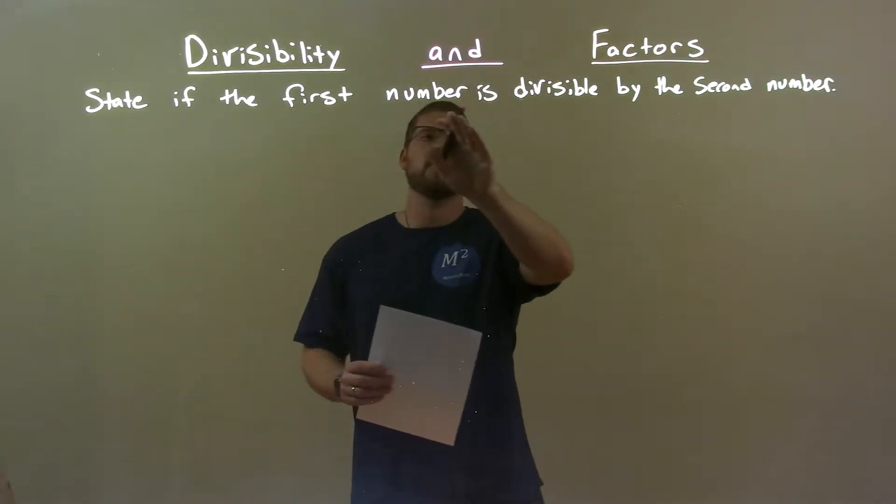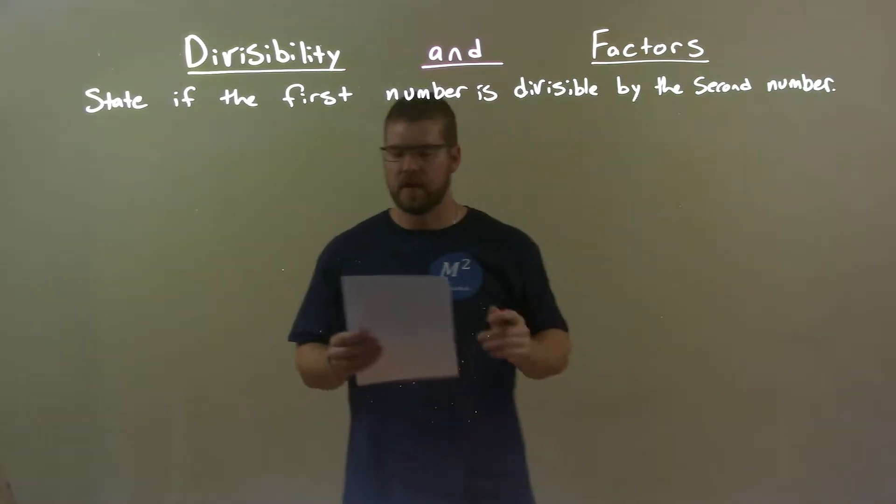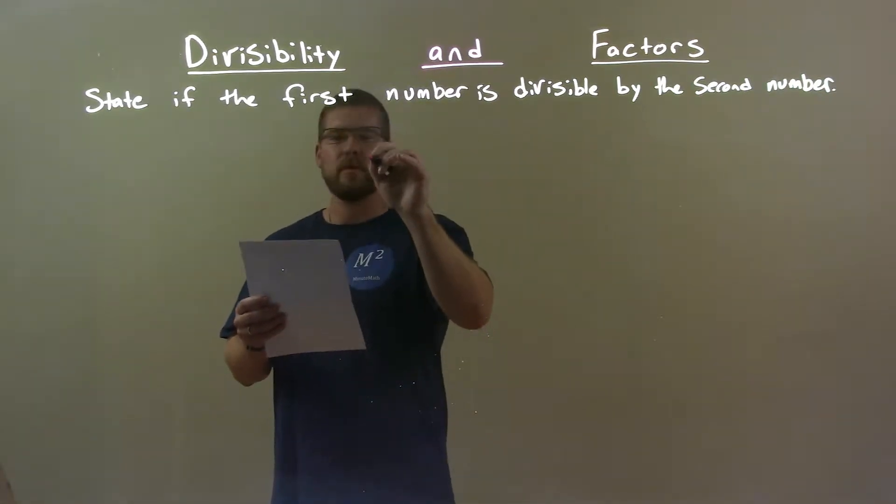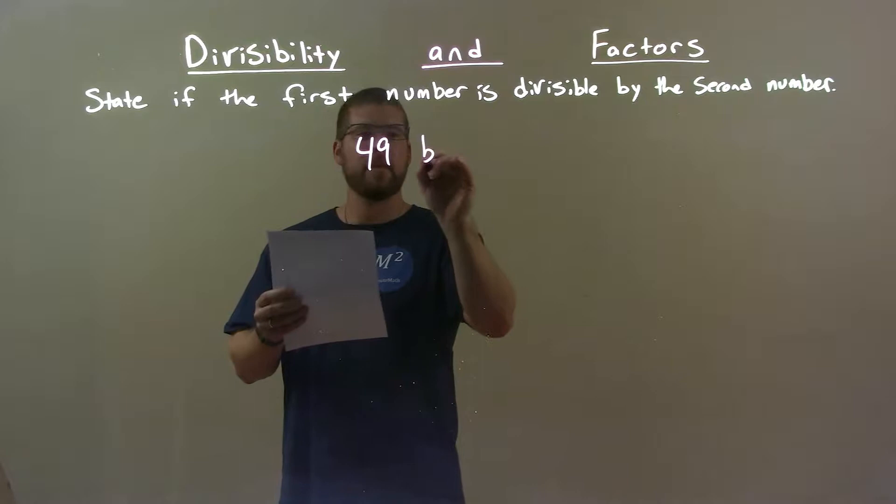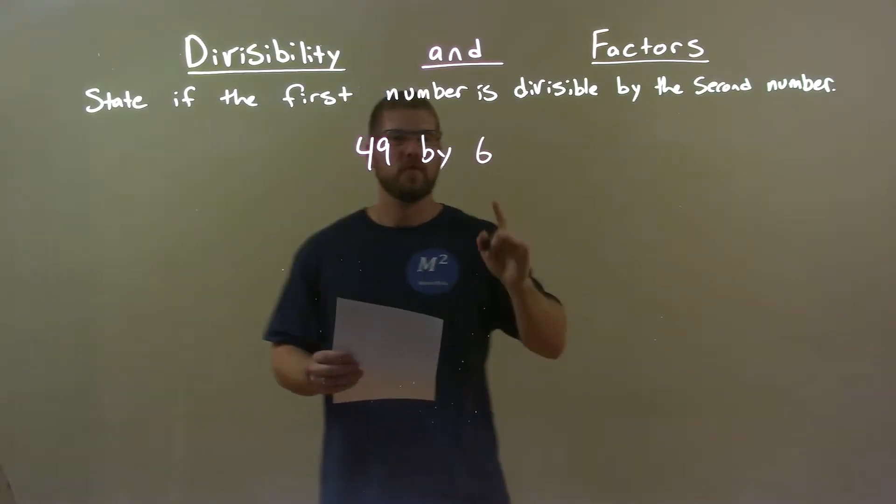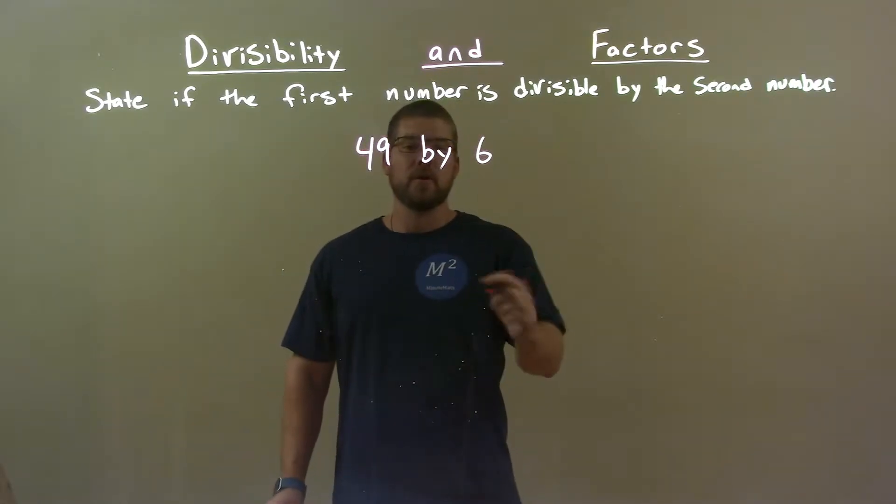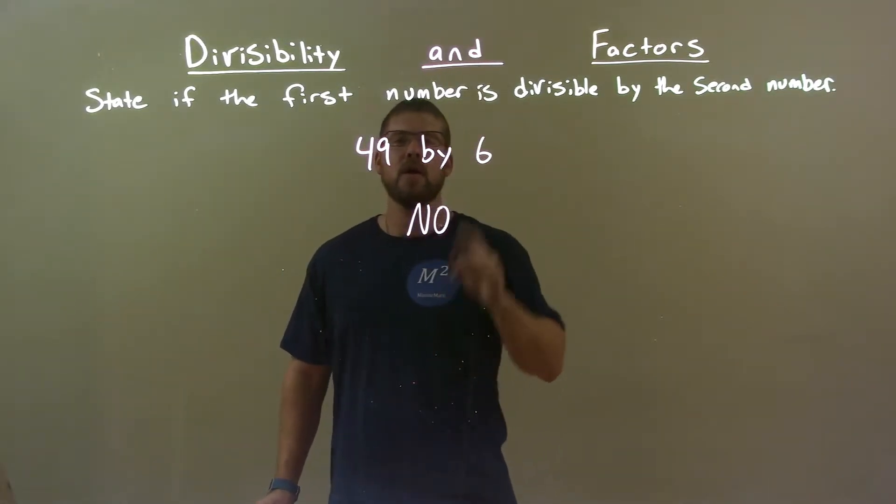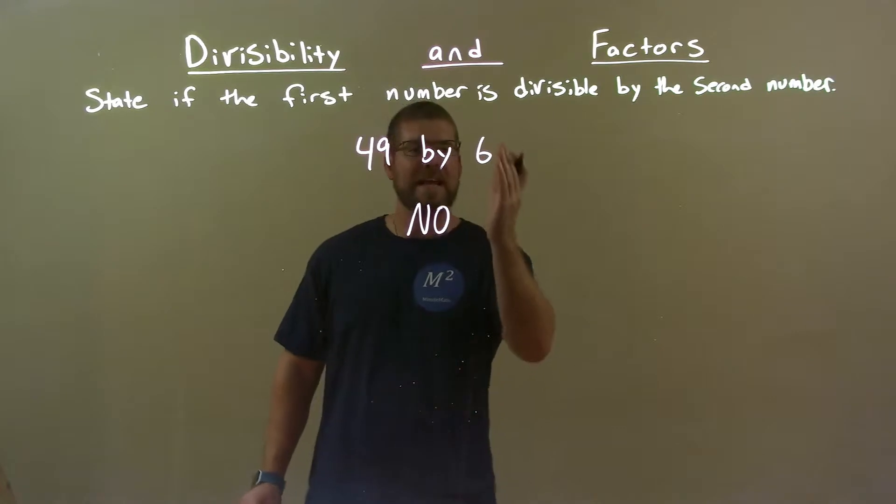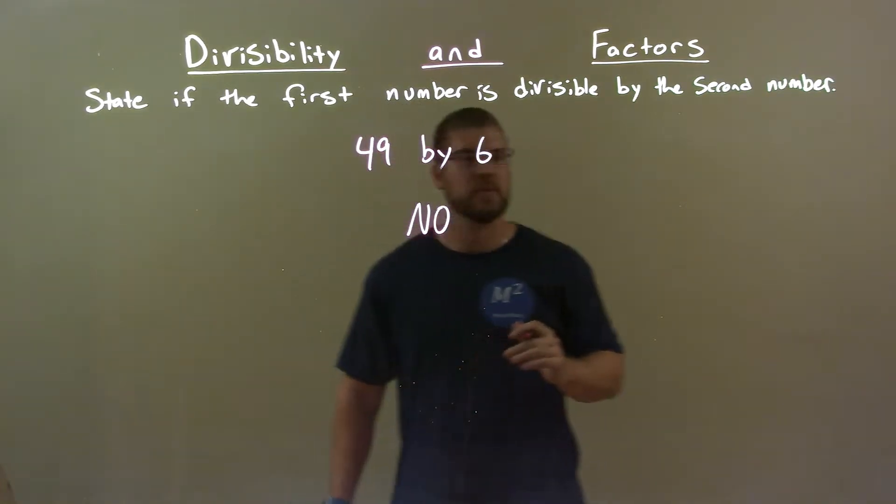I'm going to state if the first number is divisible by the second number. So, my two numbers, 49 by 6. Does 6 go evenly into 49? Well, the answer is no. No, because we have an odd number and an even number cannot go into an odd number.